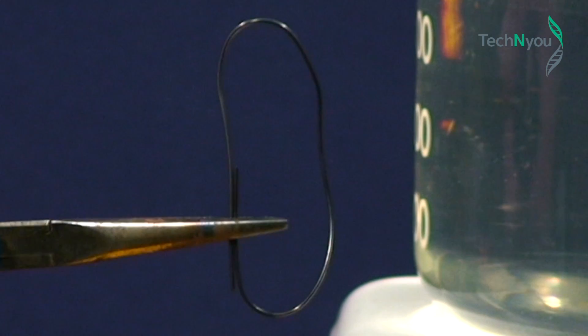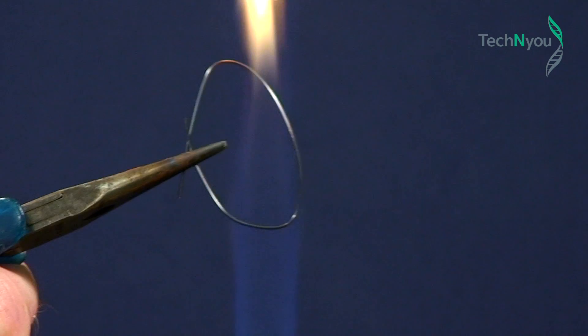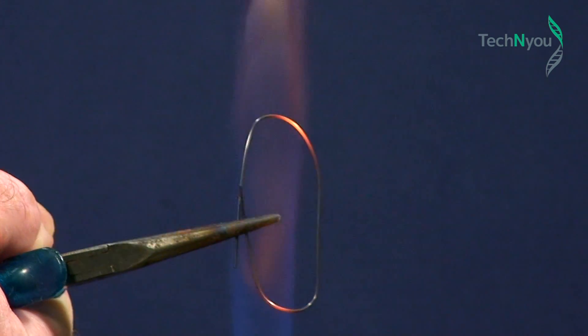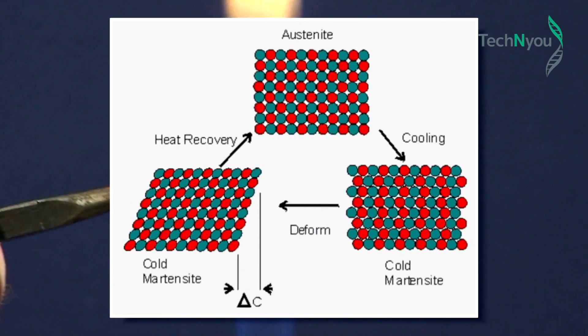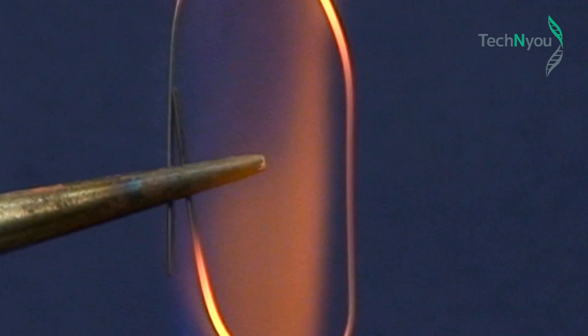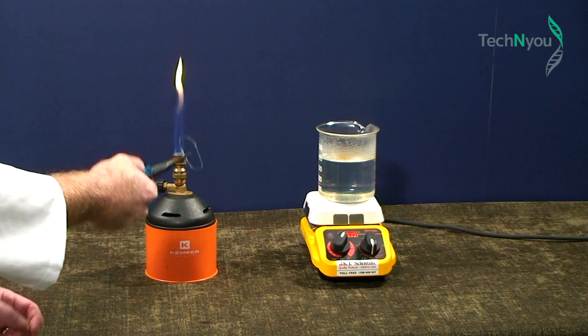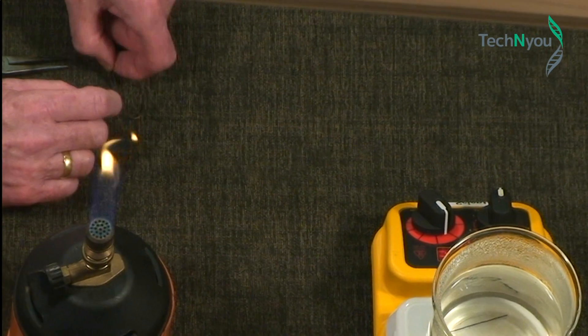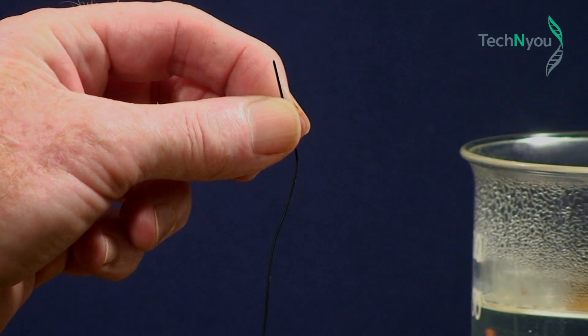This time, we bend the Nitinol wire into another shape, say, roughly a loop. Then we place the wire loop in the Bunsen burner flame. We can see the wire heating. What we can't see is the crystal structure changing. This is what gives Nitinol a new memory. We are reprogramming its structural behavior at a specific temperature so the Nitinol atoms remember this shape. We'll allow the wire to cool down. Then we'll straighten it out. It's pretty much straight.